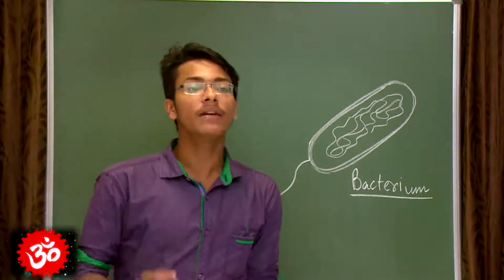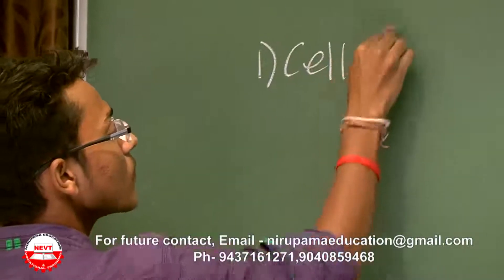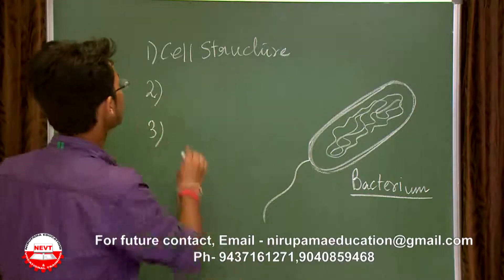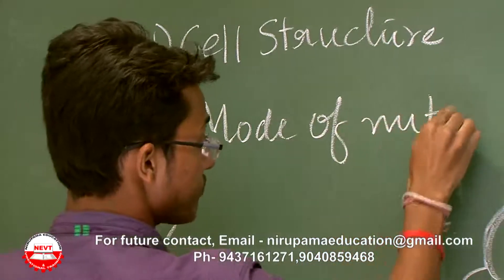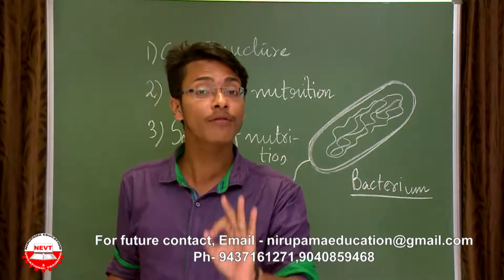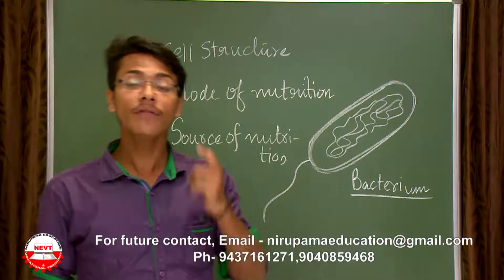We have just completed the hierarchy classification of the entire biological system. Before going into the five kingdom classification, I want to repeat once again what were the basis of classification. The basis was three: cell structure, mode of nutrition, and source of nutrition.